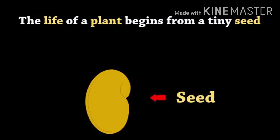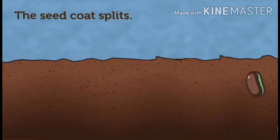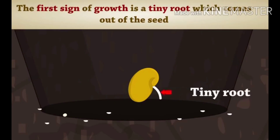First, the seed gets the right amount of air, water and warmth. Second, water enters the seed through the hole present in the seed coat. The seed coat breaks open and the root of the new plant emerges.